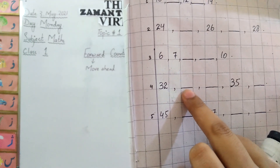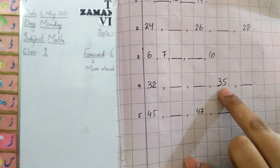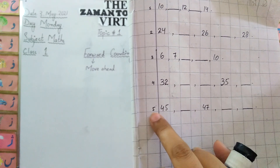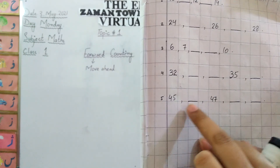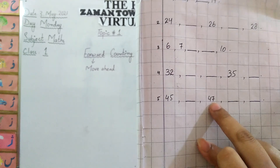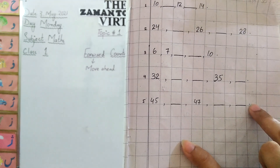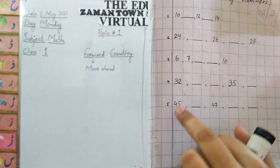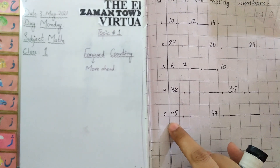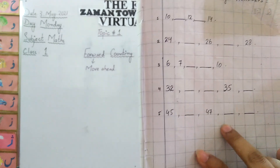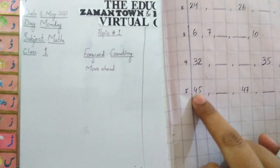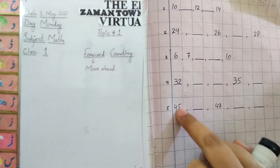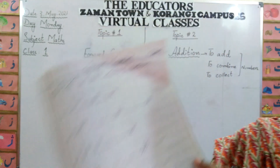For question four: thirty-two, blank, blank, thirty-five, then blank — you will solve by yourself. And last, number five: forty-five, blank, forty-seven, blank, blank, and it's finished there. There are five lines. Three I have solved; four and five, you will solve by yourself. Do it very correctly — one number in one box. Write neatly and solve correctly.